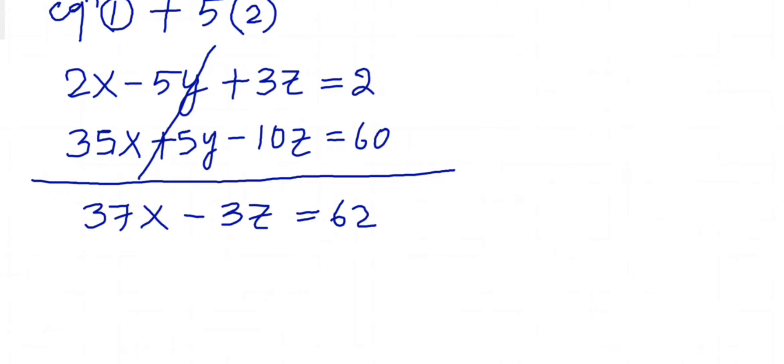So say this is equation 3. And now what we'll do? Now we'll take equation 2 and equation 3 and again we'll eliminate the middle term. I'll multiply 2 with equation 2, 2 with equation 2 plus equation 3.